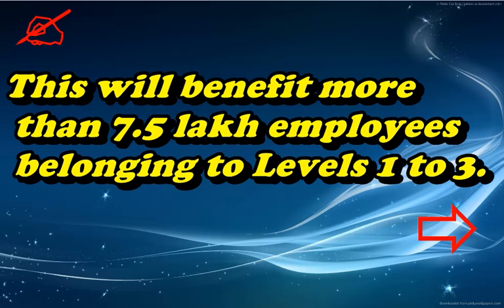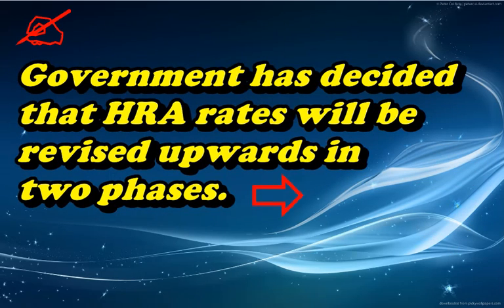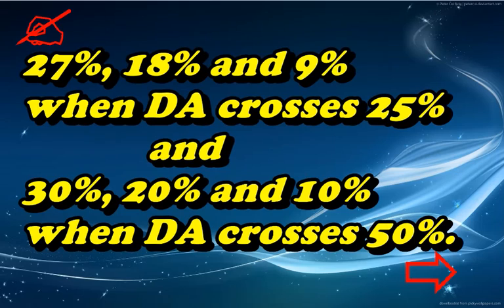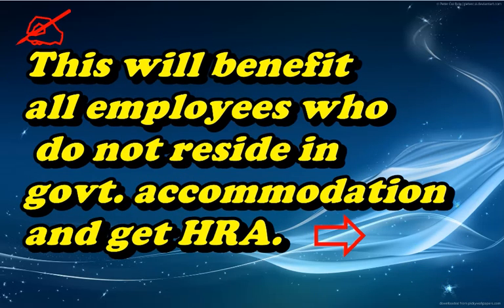This will benefit more than 7.5 lakh employees belonging to levels 1 to 3. The government has decided that HRA rates will be revised upward in two phases: 27%, 18% and 9% when DA crosses 25%, and 30%, 20% and 10% when DA crosses 50%. This will benefit all employees who do not reside in government-provided accommodation and receive HRA.